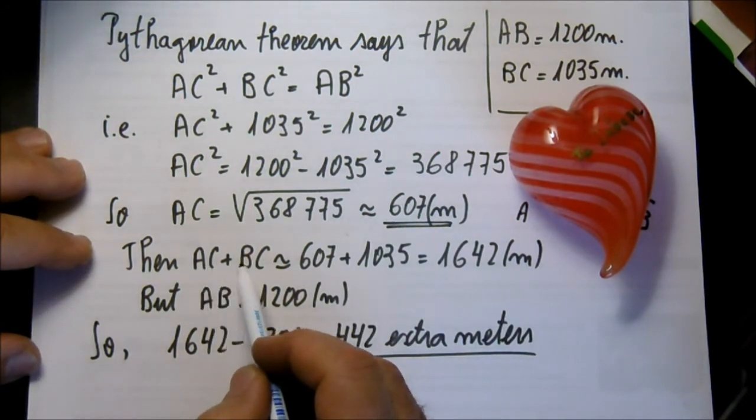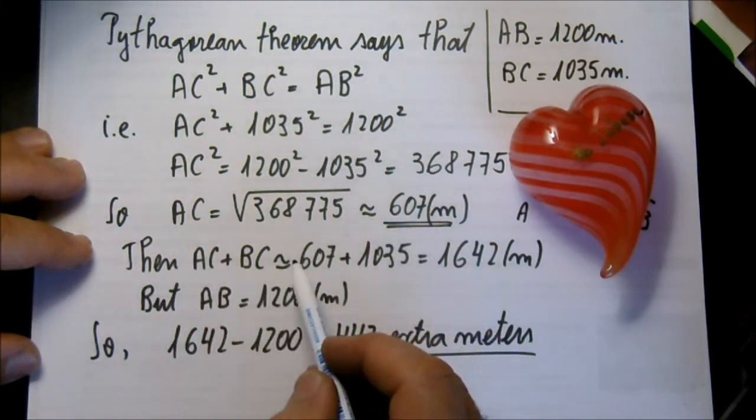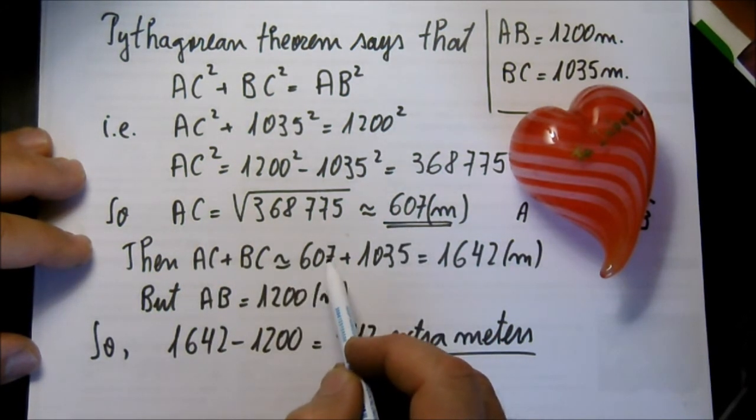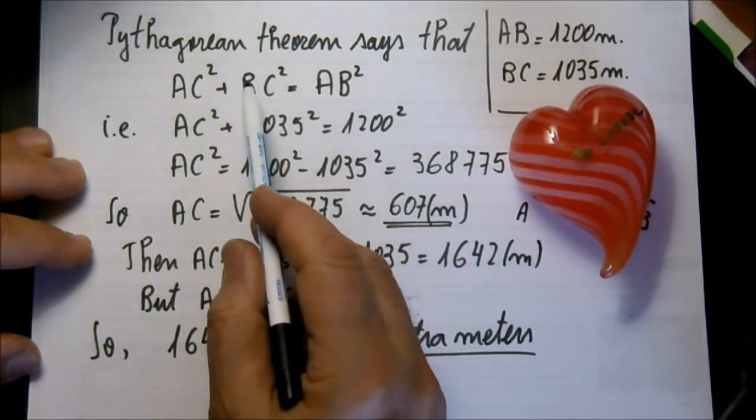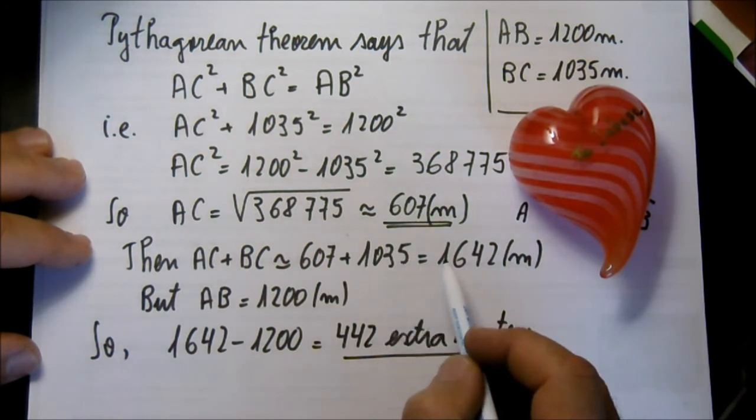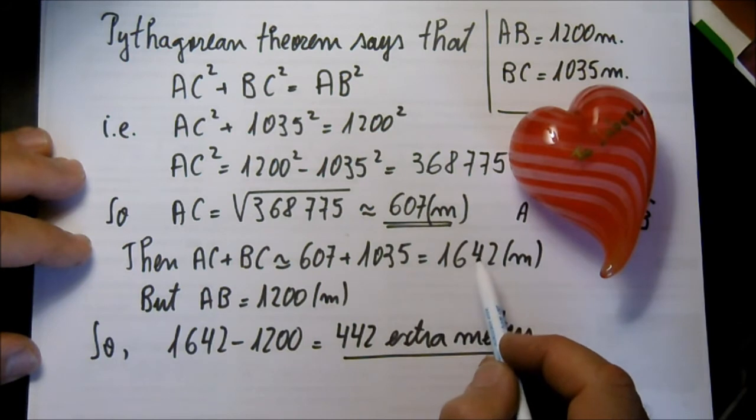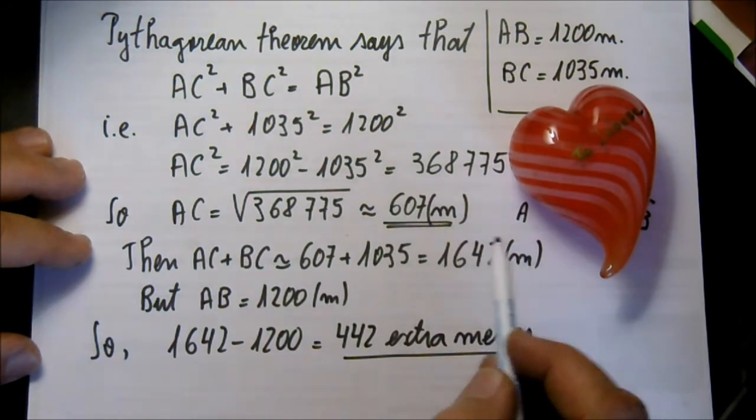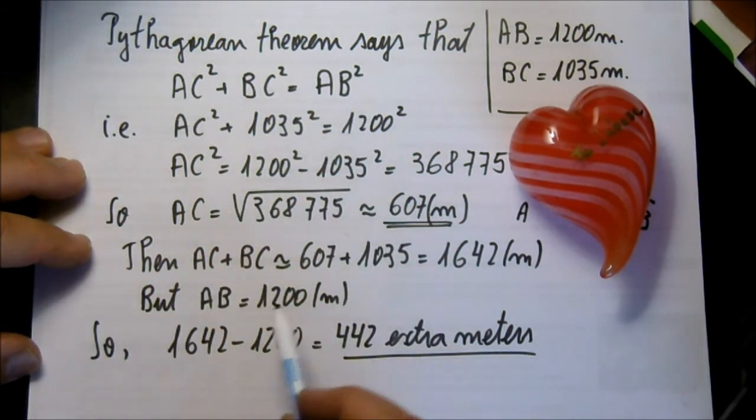Then AC plus BC equals 607 plus 1,035 equals 1,642 meters. But AB equals 1,200 meters.